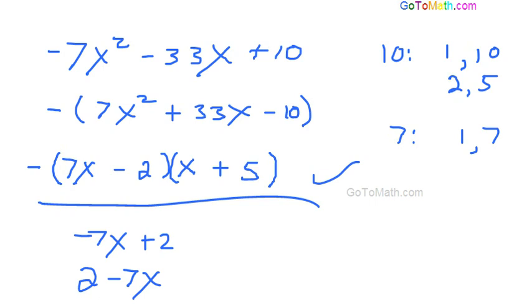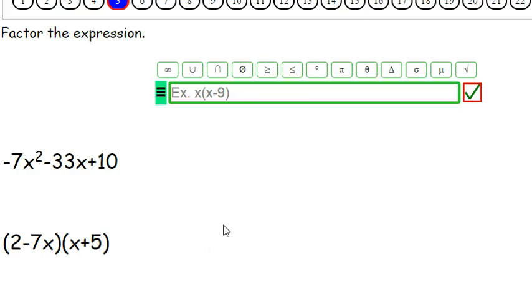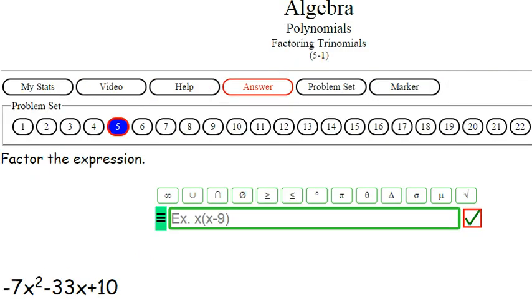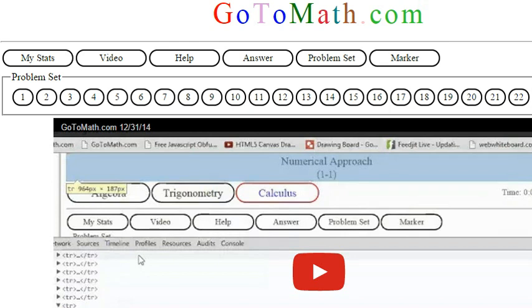See that? 2 minus 7x. So if you're wondering where this comes from, that's it. So we're over here at GoToMath.com practicing some factoring. And see you in the next problem.